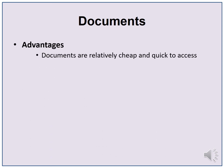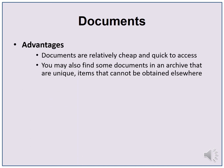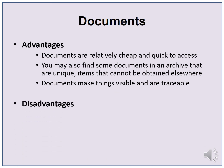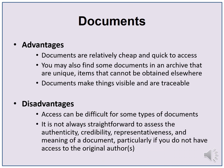Here are some advantages of using documents in social research. Documents are relatively cheap and quick to access. You may also find some documents in an archive that are unique — items that cannot be obtained elsewhere. Documents make things visible and are traceable. Some disadvantages are: access can be difficult for some types of documents, such as emails or documents in an archive located far away. It is not always straightforward to assess the authenticity, credibility, representativeness, and meaning of a document, particularly if you do not have access to the original authors.